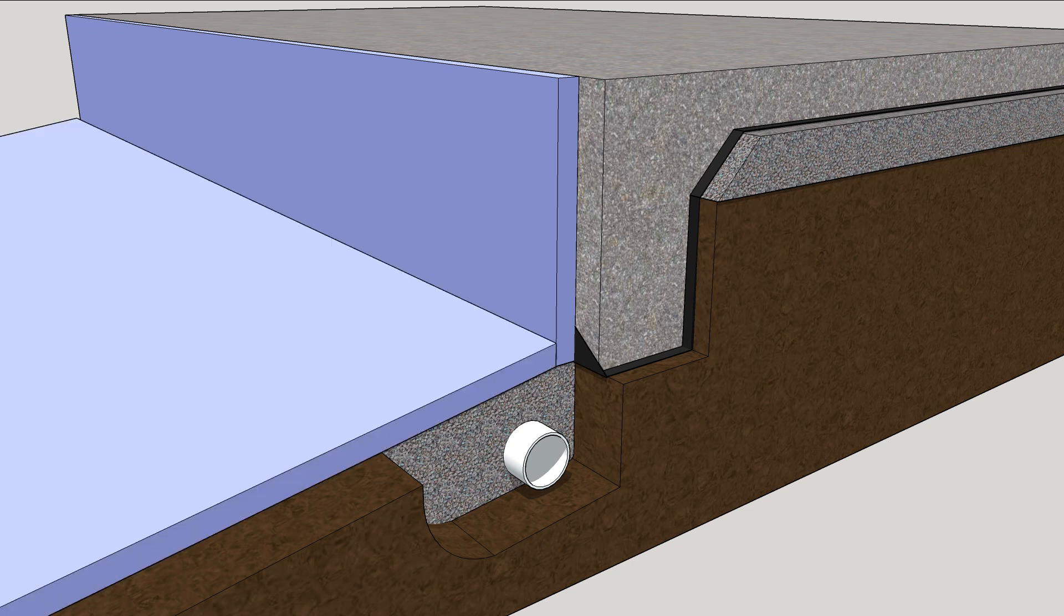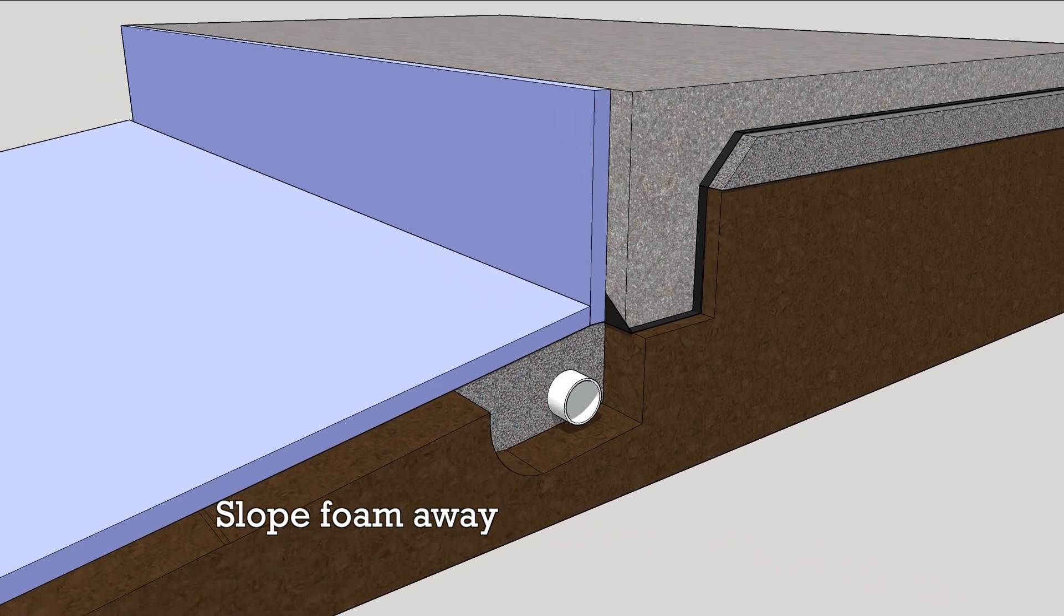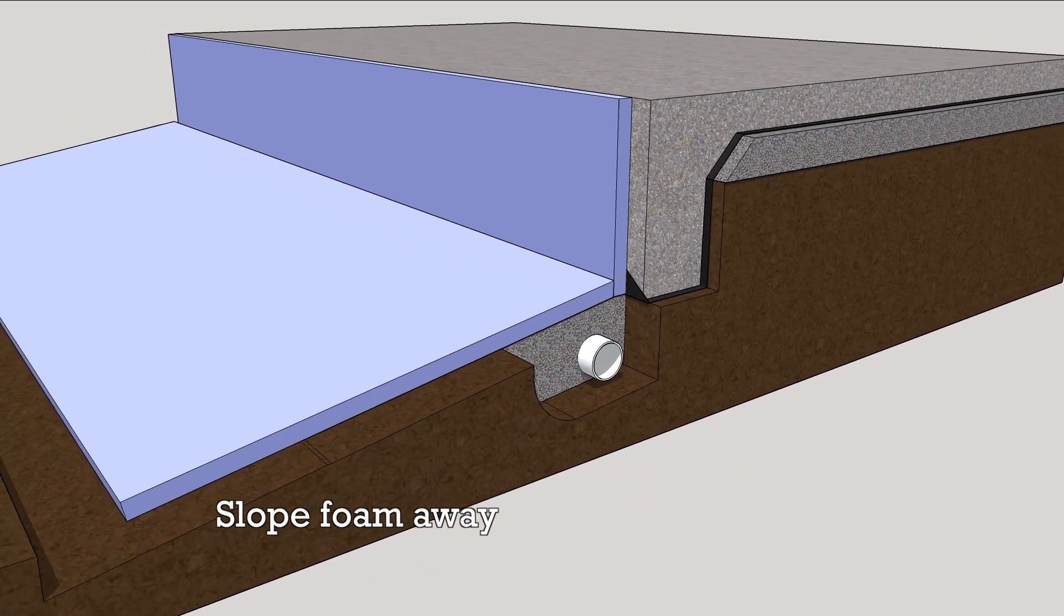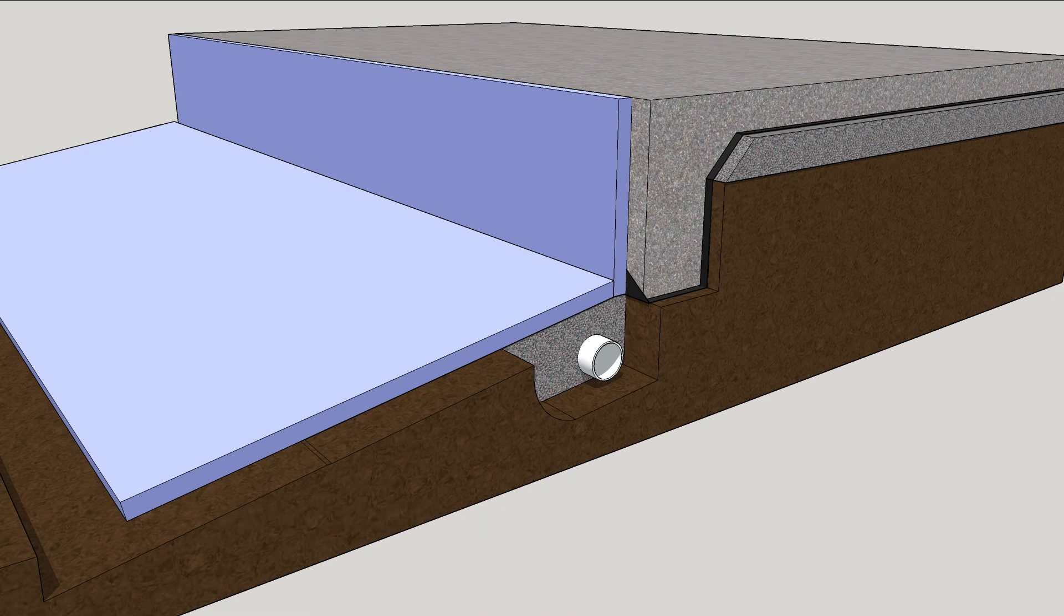Lay another board of foam horizontally over the drainage gravel, sloping away from the house. This piece should extend about 4 feet from the house to completely protect against frost heave.